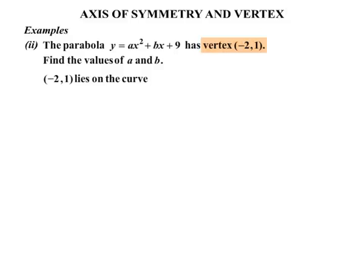Well let's just consider this. Minus 2, 1 lies on the curve. Now we're told it's the vertex, but it also lies, it must obviously lie on the curve. What that means is that equation there, y equals ax squared plus bx plus 9, those coordinates could satisfy. So in place of y we could write 1. And in place of the x's wherever we see x, we're going to write the minus 2. So by substitution we get a times minus 2 squared plus b times minus 2 plus 9.